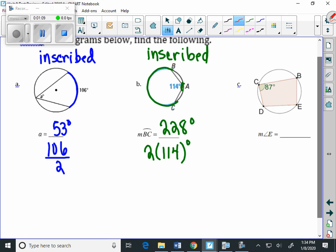Letter C. We need to find the measure of angle E, and what we need to know is that in this inscribed quadrilateral, opposite angles are supplementary.